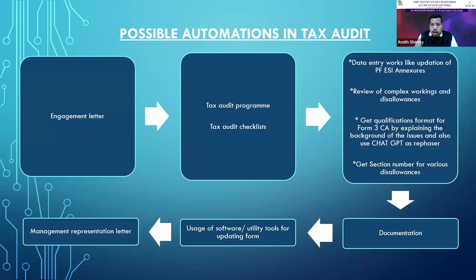ChartGPT can also be used for reviewing various complex workings and disallowances that we come across in tax audit and income tax computation. For example, if you have done depreciation as per the IT Act and you want AI to review that, you can just take a print screen of that and paste it to ChartGPT. It will give you the output as to whether your working is correct. There can be certain complex matters in depreciation and in those cases also it will help us.